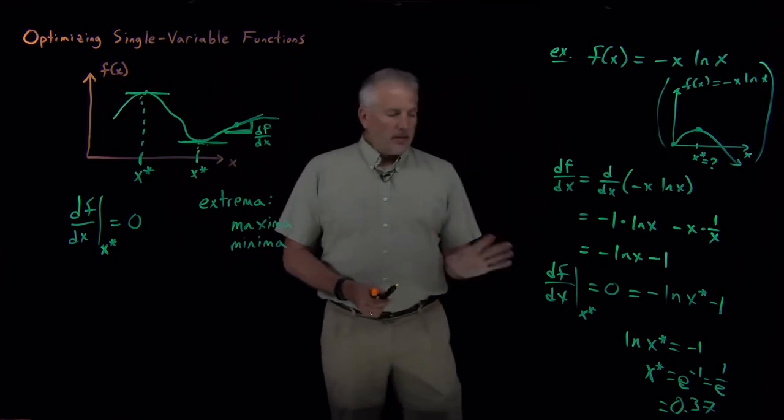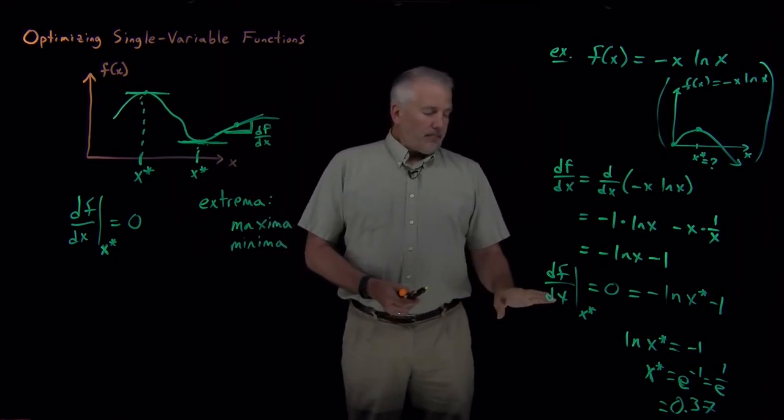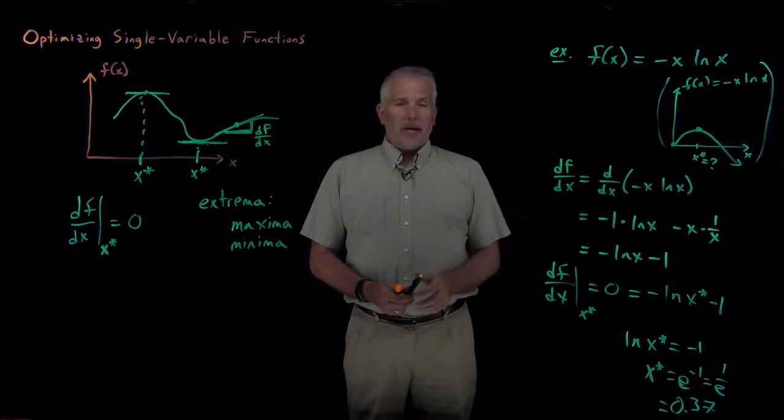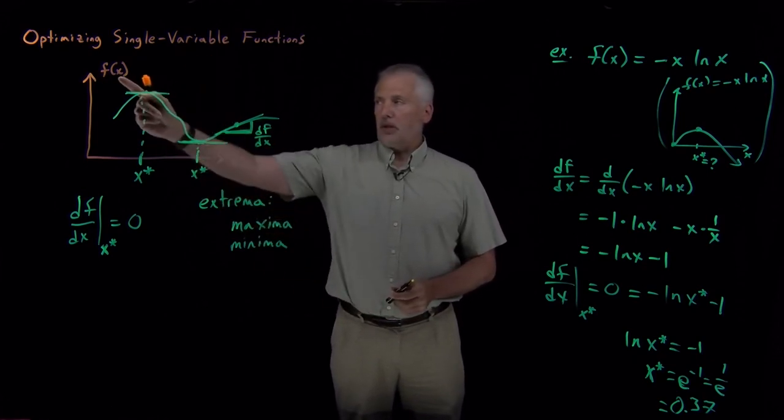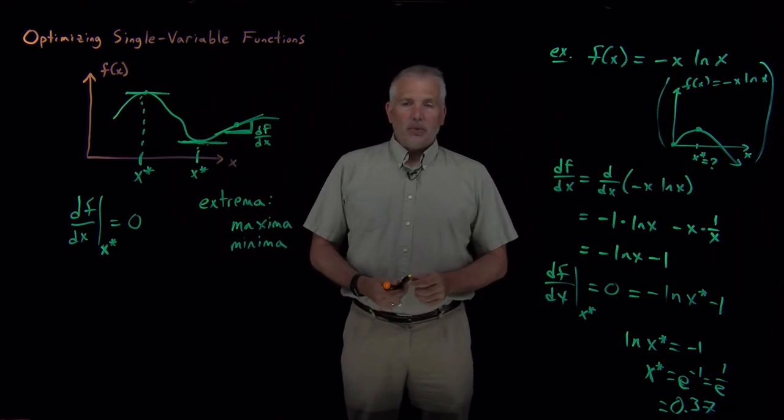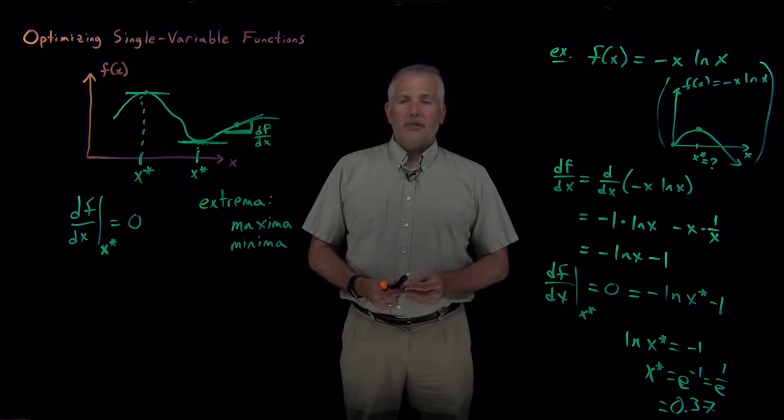So this is an example, hopefully review, for how to calculate the maximum of a function, in particular, a single variable function, a function that depends on only one variable. When we start talking about entropy, entropy depends on more than just one variable. So our next step will be to calculate the maximum or minimum for multivariate functions.